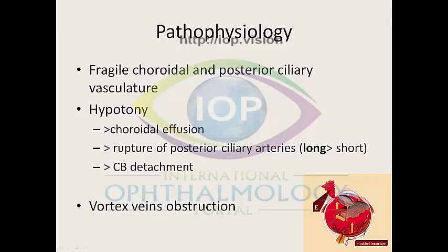If the choroidal effusion and haemorrhage extend anteriorly, detachment of the ciliary body and tearing of the ciliary body vessels result in profuse bleeding and massive suprachoroidal haemorrhage. Obstruction of the vortex vein, for example by sclerobuccal, is believed to be another cause as it leads to choroidal vascular engorgement.